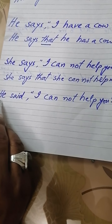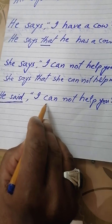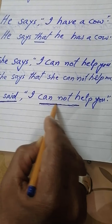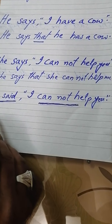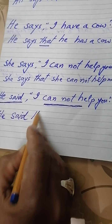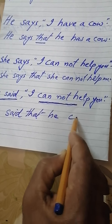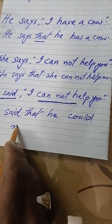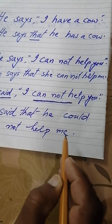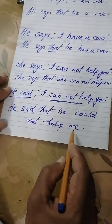He said — dear guys, here the reporting speech is in past, so this part will also be in past. Direct: 'He said I cannot help you.' Indirect: 'He said that he could not help me.' So this is indirect narration. He said that he could not help me.